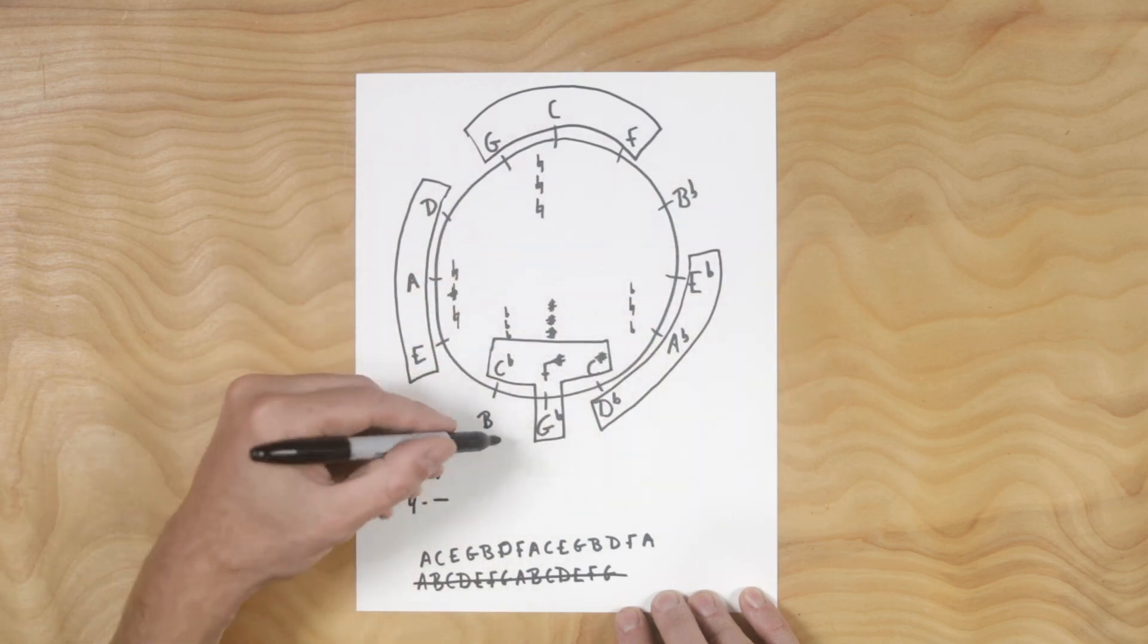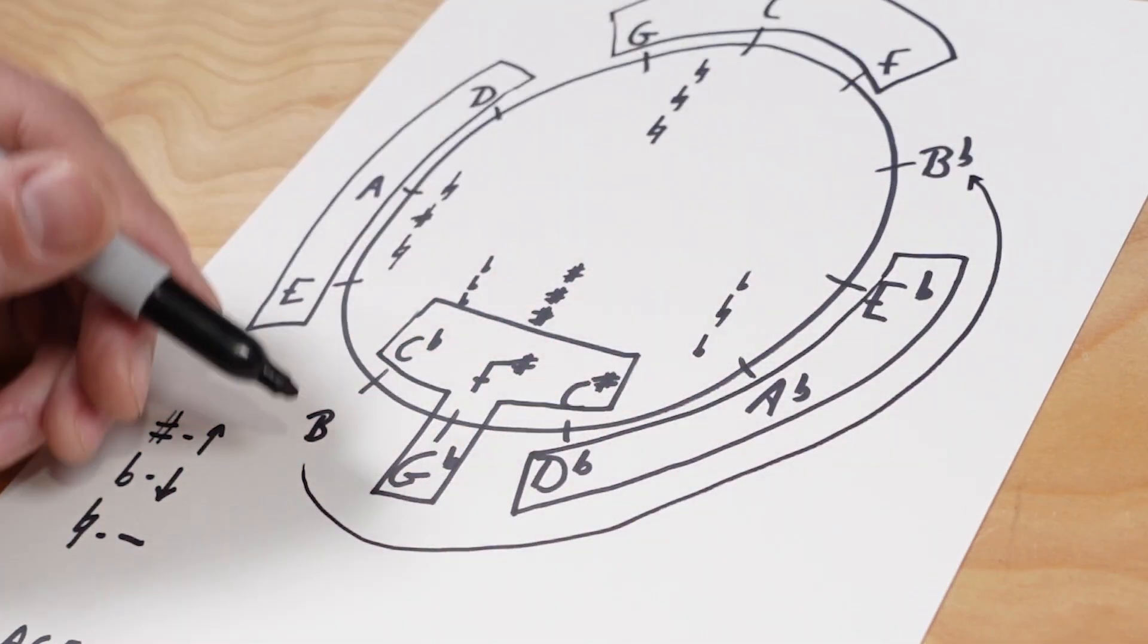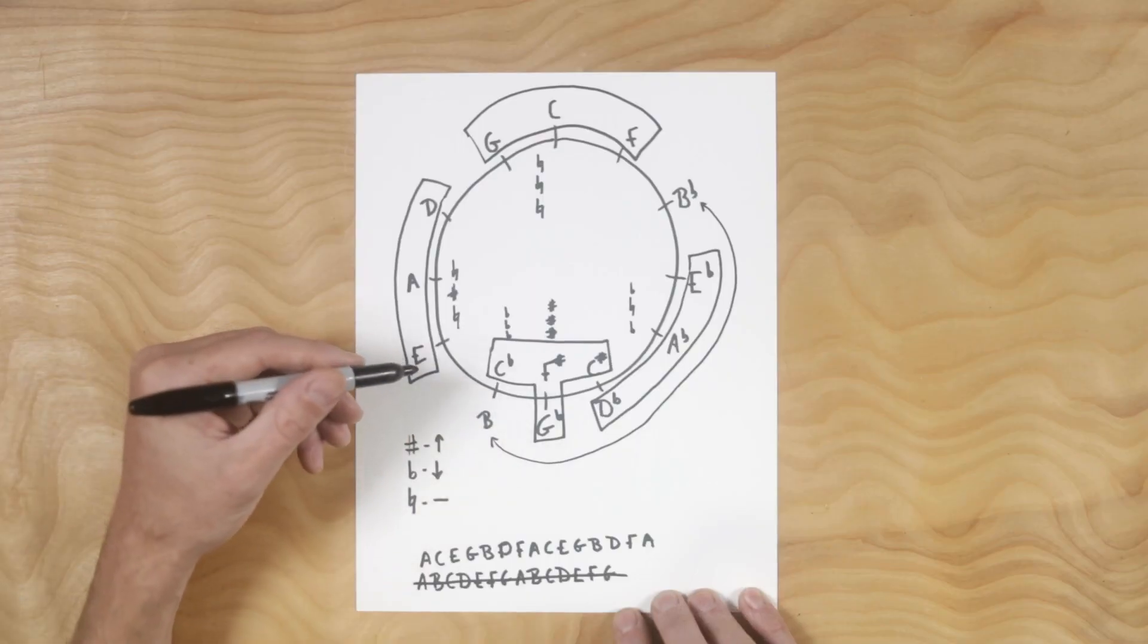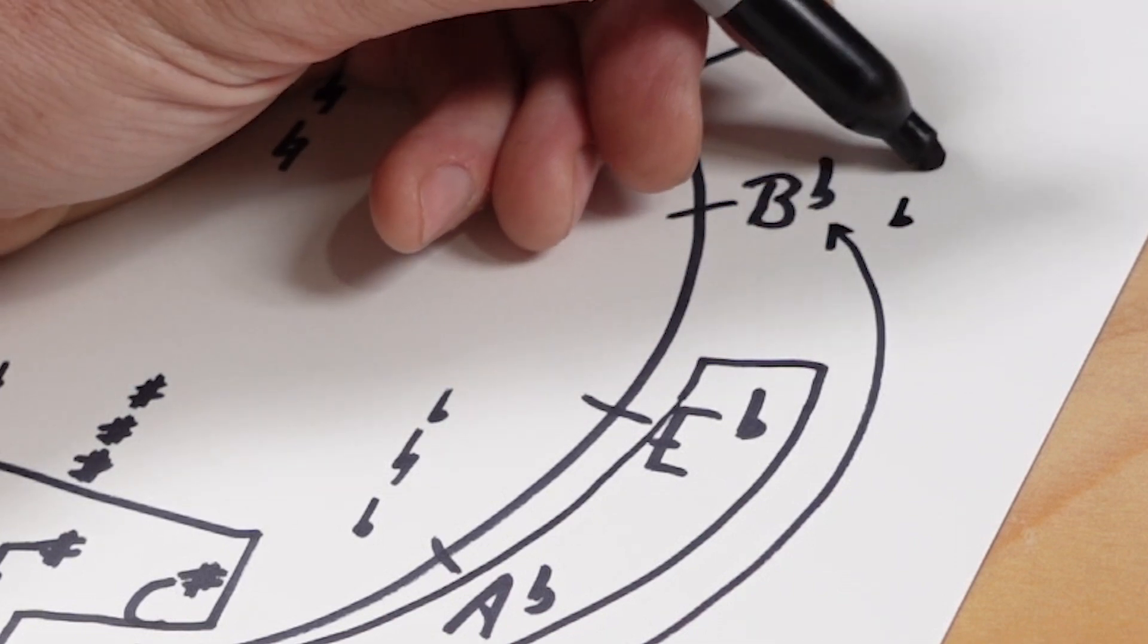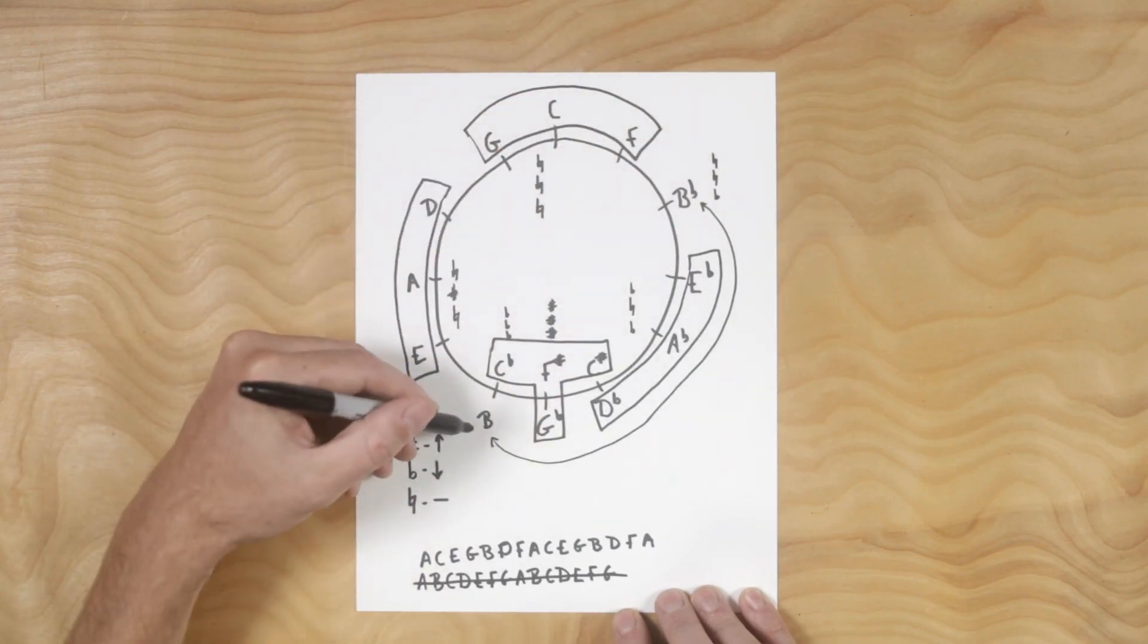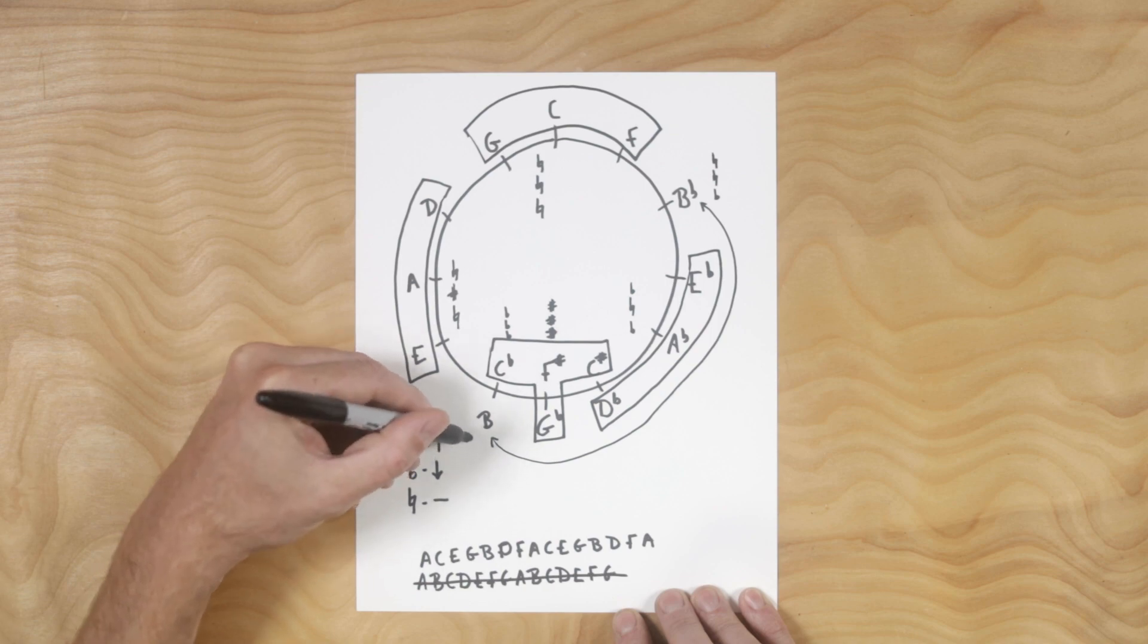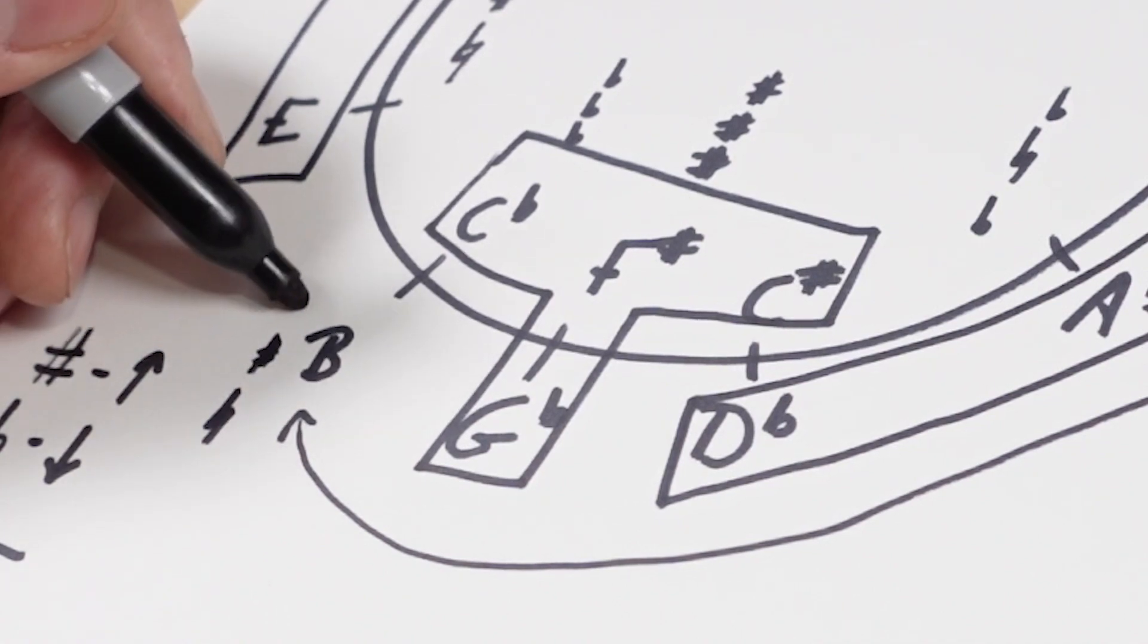That just leaves these two here. We have B and B flat. These are kind of like our odd balls. So B flat starts on a flat, and this one is flat, natural, natural. And then the opposite of that would be natural. This is on the sharp side of the circle. We have sharp, sharp.